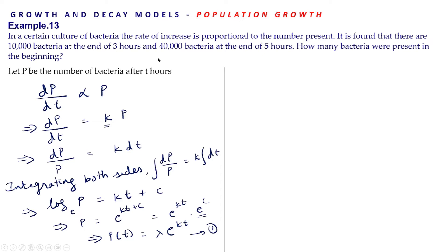Questions of this type can be expected for 4 marks; the same question was asked in last year's question paper. Up to this step carries 2 marks. It is given there are 10,000 bacteria at end of 3 hours and 40,000 at end of 5 hours. The number of bacteria at any time is P(t) equal to lambda·e^(kt).